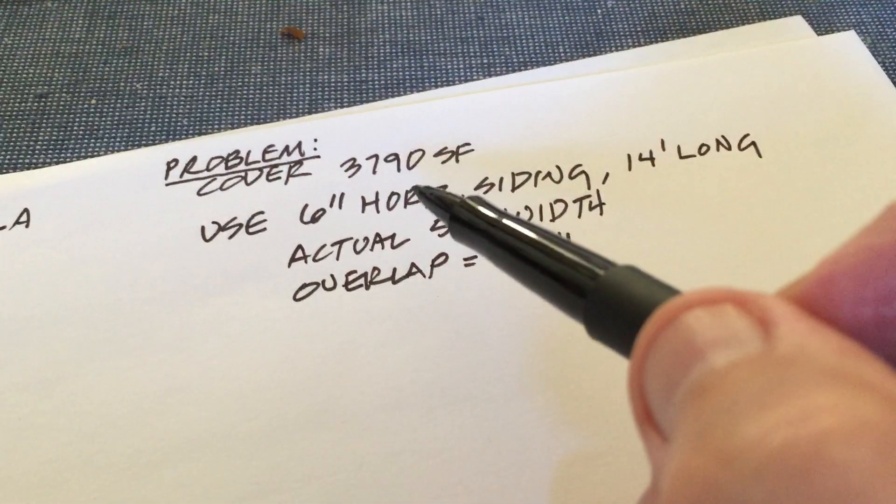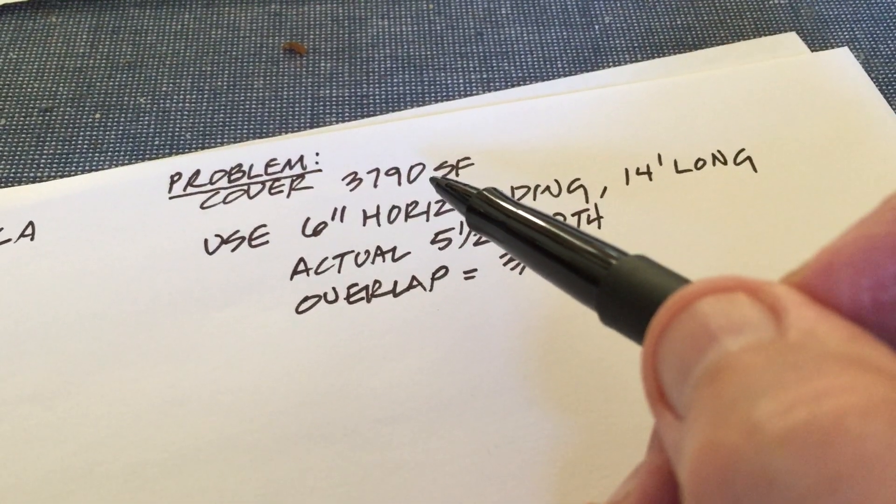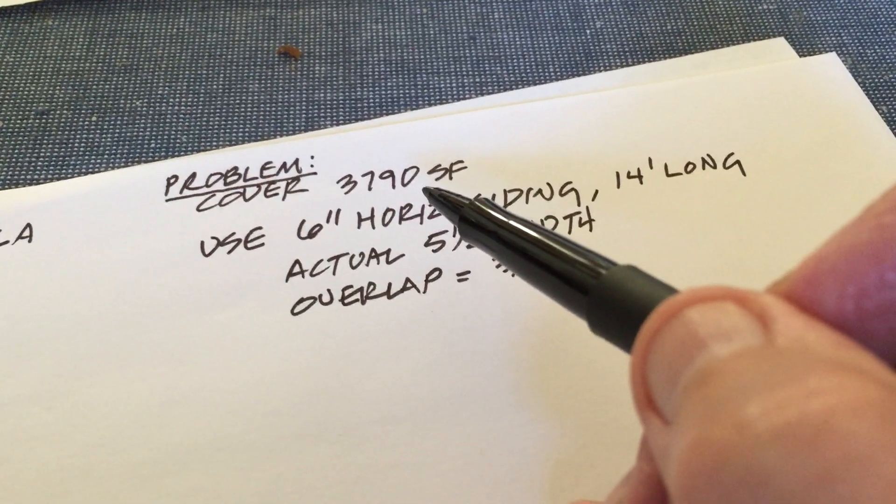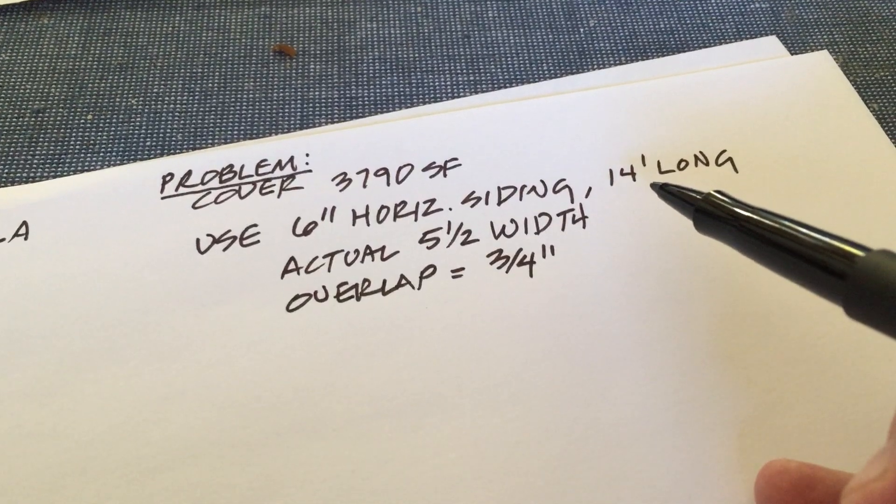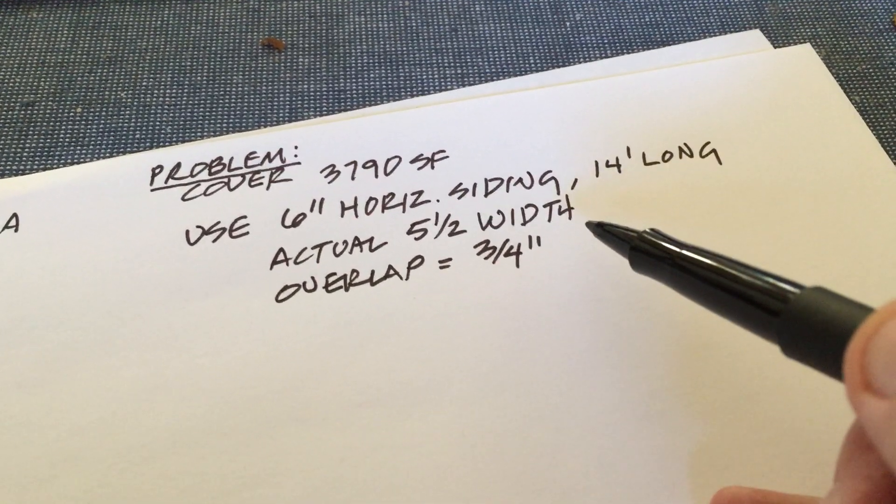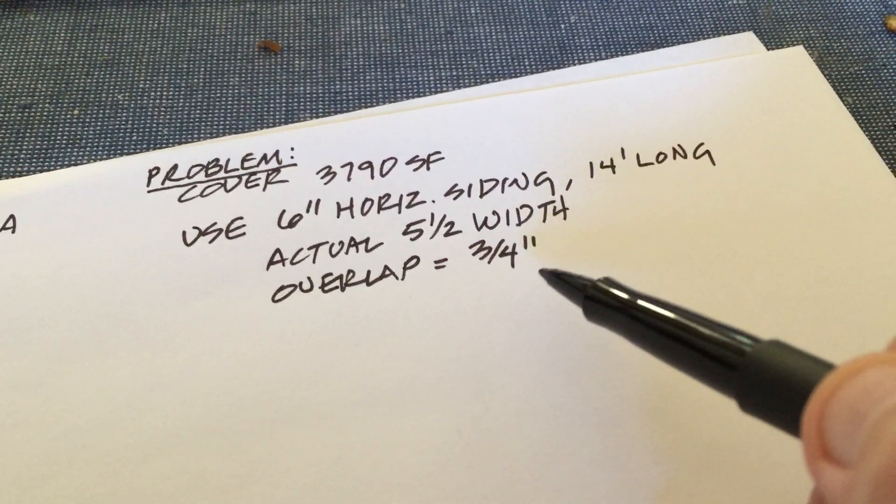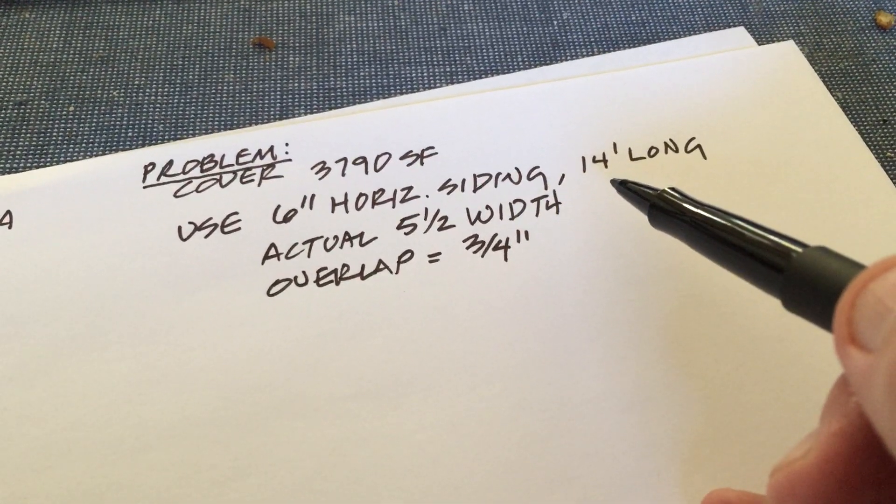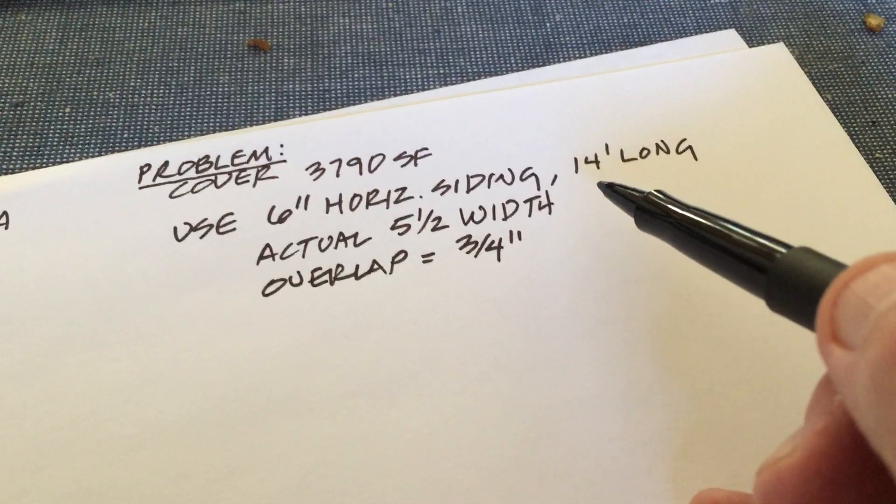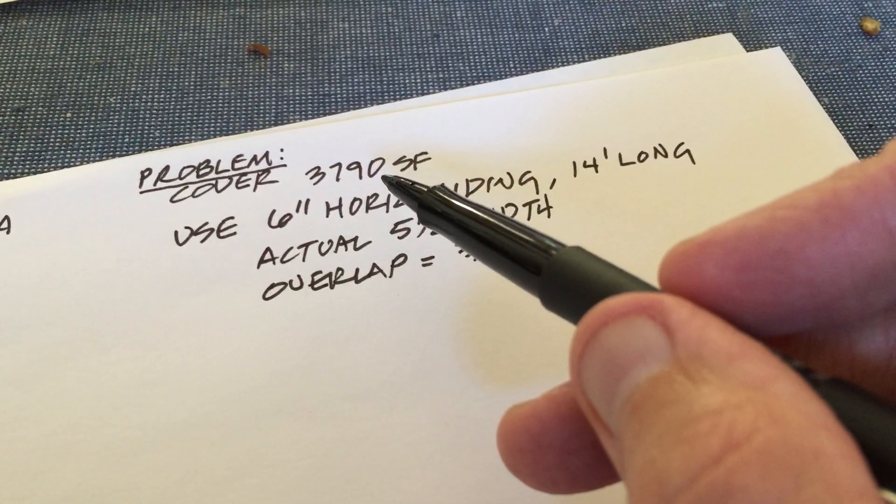We want to use some horizontal siding to cover 3,790 square feet. We're going to use 6 inch horizontal siding. The boards are 14 feet long. That means they're actually five and a half inches wide and we're going to use an overlap of three quarters of an inch. How many of these 14 foot long boards do we need to cover this amount of square footage?